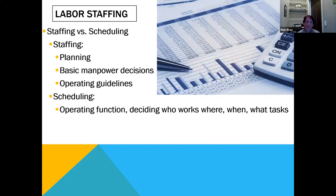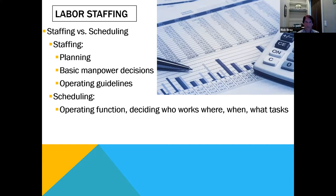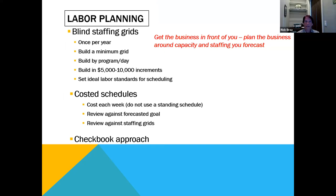Staffing is different from scheduling. Staffing is planning — making your manpower decisions and operating guidelines. Blind staffing grids were a revelation for one client who only ever wrote a schedule. Scheduling is an operating function — it decides who works where, when, and what tasks. But manpower staffing is: here's what the business needs. That's how you should staff your restaurant — not who can work where. That is the Achilles heel of our industry. You do these blind staffing grids once a year, build a minimum grid by day.